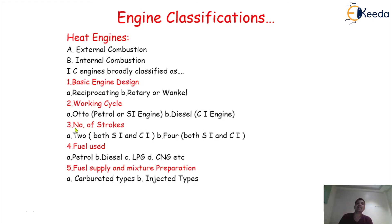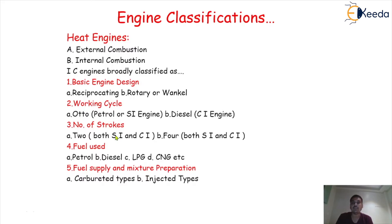The third basis is number of strokes. So it is classified as a two-stroke engine and a four-stroke engine — both in the case of SI and CI engines. SI means spark ignition, and CI means compression ignition engine. Generally, SI means petrol engine and CI means diesel engine. Always remember: whenever I use the words SI and CI, SI means petrol engine and CI means diesel engine.